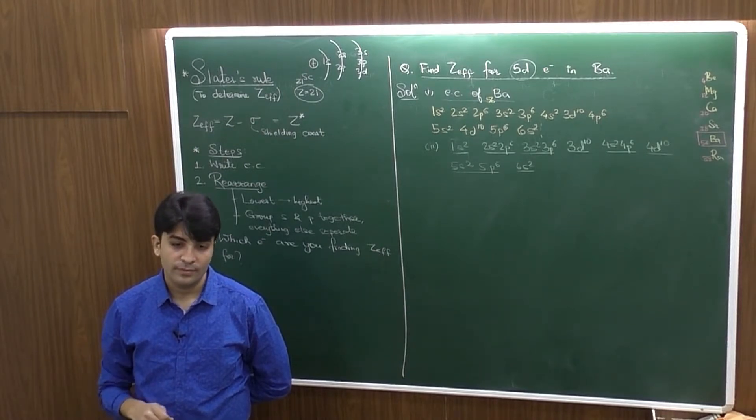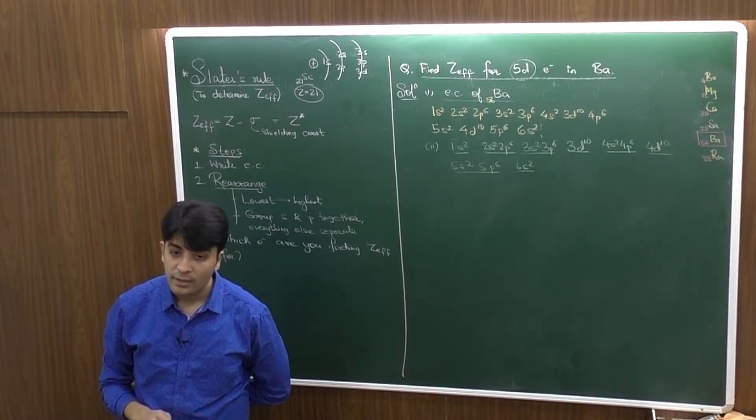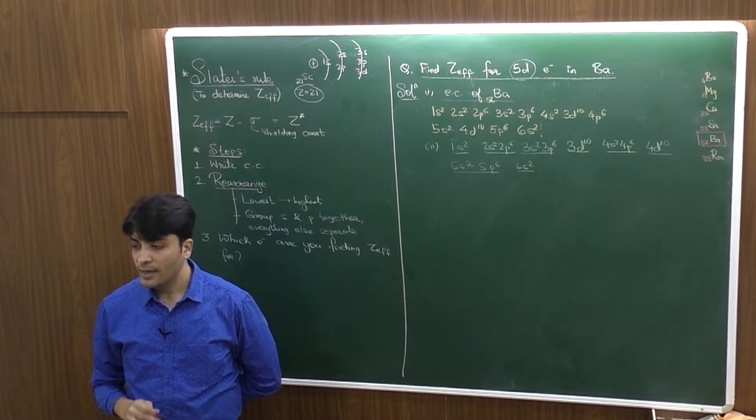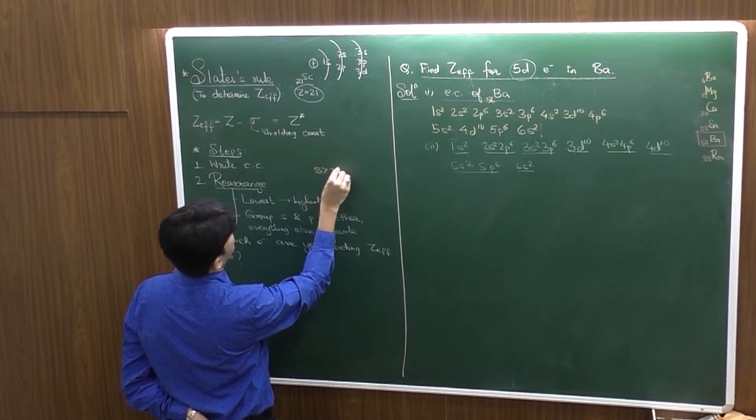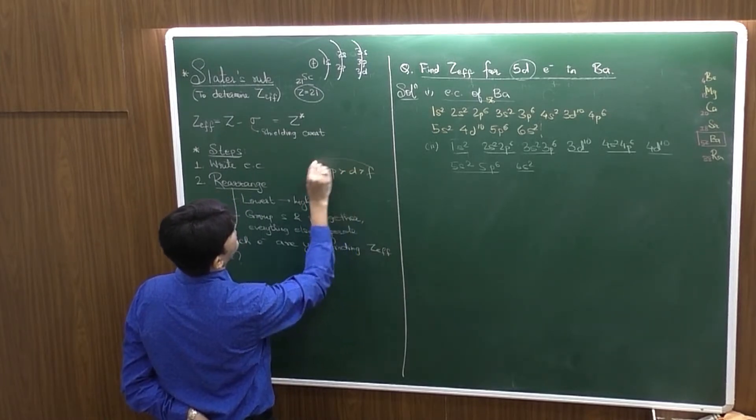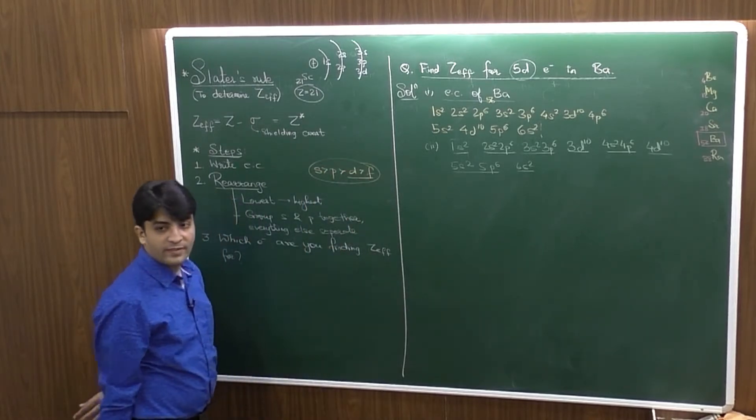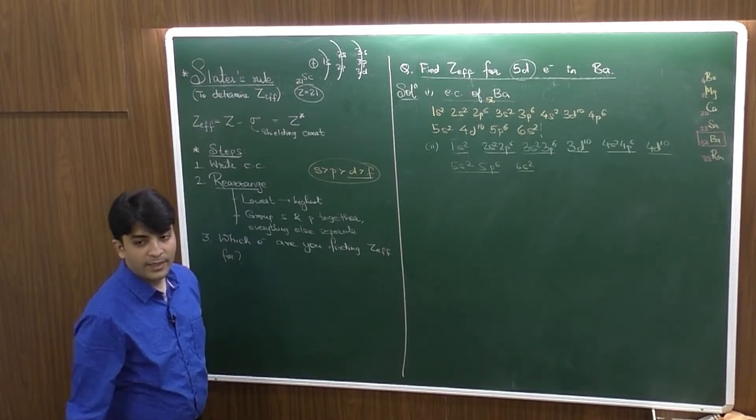Which electron are you finding Zeff for? That is a question you should ask yourself. Related to the question, I am finding Zeff for the D electron in the fifth shell, that is 5D electron. Now, why that is important? Because, if I talk about the shielding, S, P, D, F electrons, will it shield to the same extent? No. The shielding will be higher for S, P, D, F.